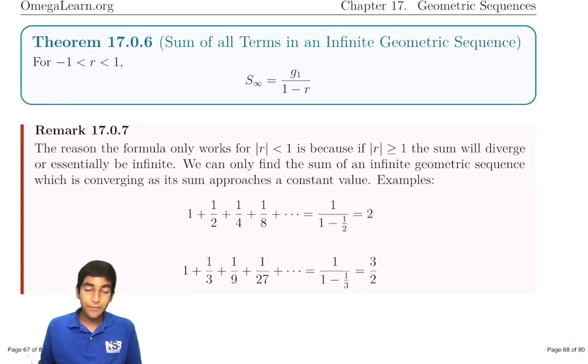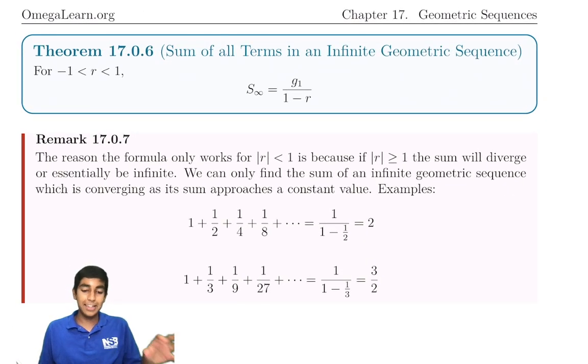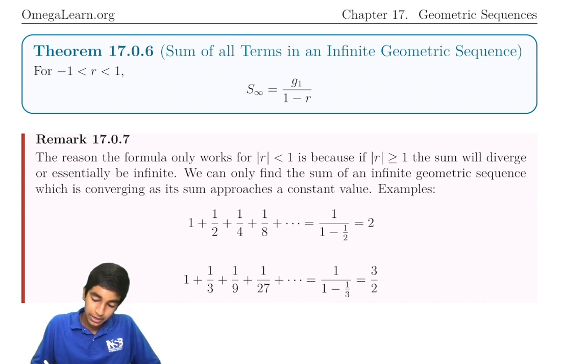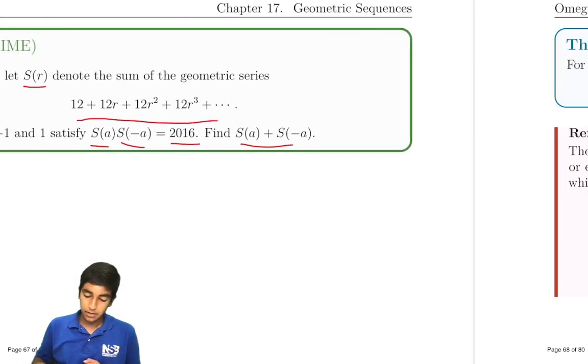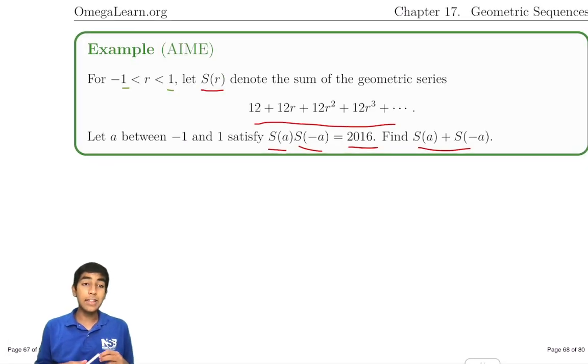To do this problem, we'll have to use the infinite geometric series formula because it's not a finite series. The formula here is the first term divided by 1 minus r, also sometimes written as a over 1 minus r. This only works if the common ratio is between negative 1 and 1, because if it's not, it will diverge.